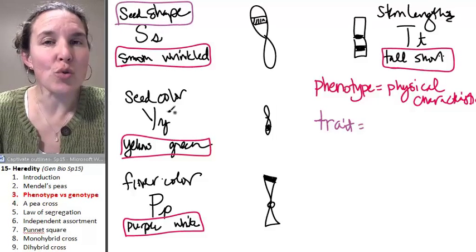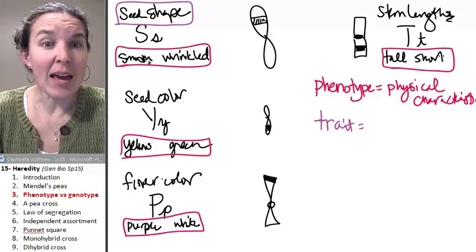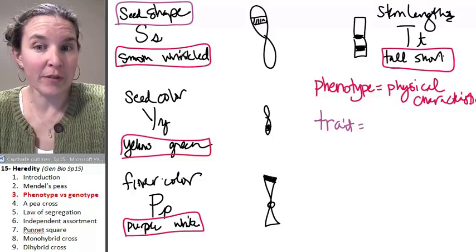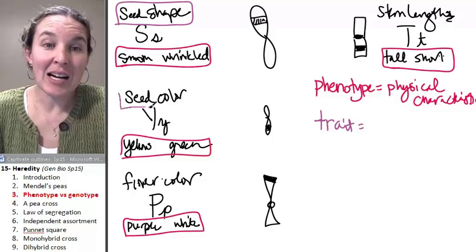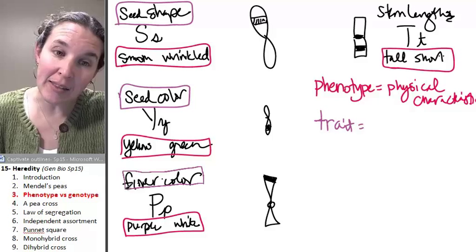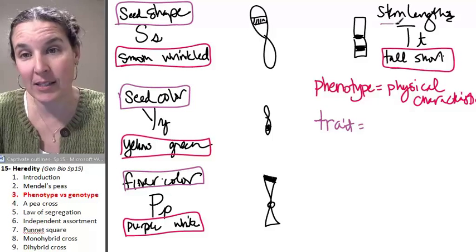Seed shape is the trait that can show a smooth or wrinkled phenotype. Seed color is the trait. Eye color is the trait. Hair length, I mean not length, hair curliness is the trait.